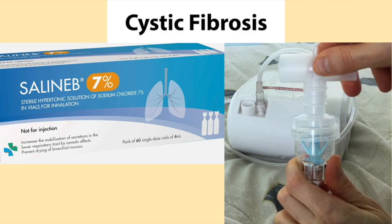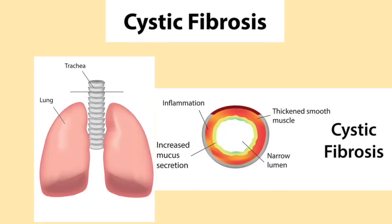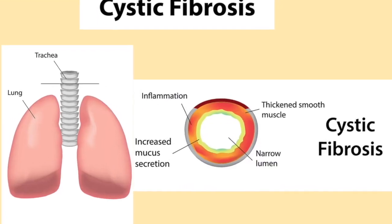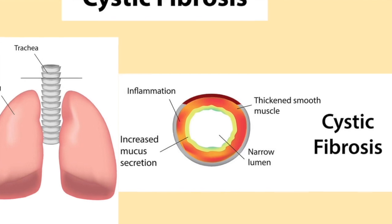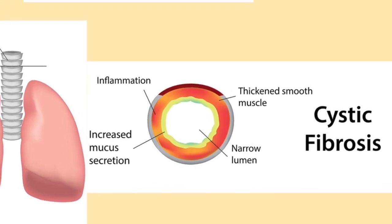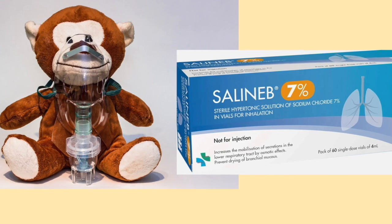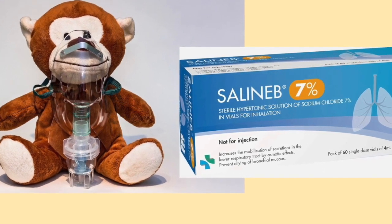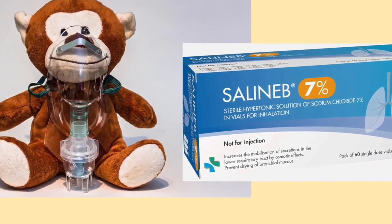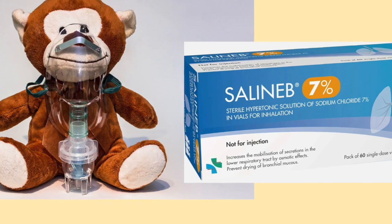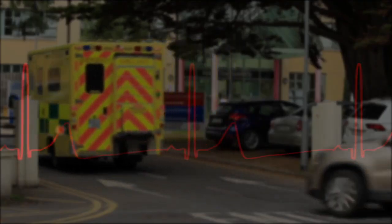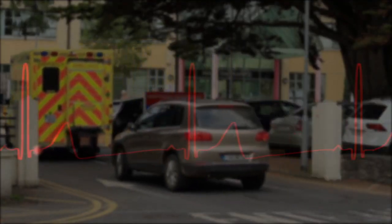A common treatment for people with cystic fibrosis is using 7% hypertonic saline in a nebulizer. In individuals with cystic fibrosis, their sputum is extremely thick and is very hard to cough up. Research has shown that using 7% hypertonic saline in people with cystic fibrosis twice a day in a nebulizer helps reduce the number of lung infections.